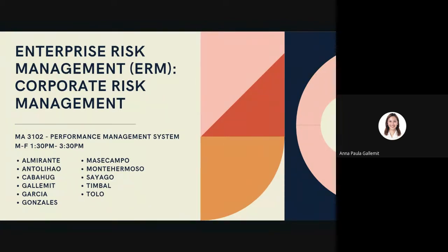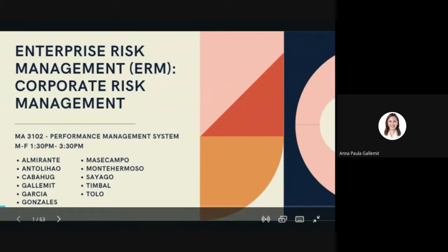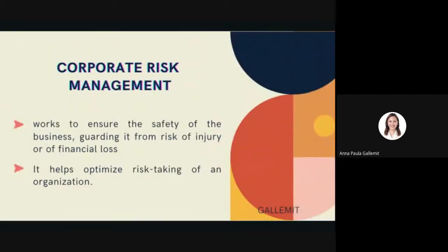Good day everyone. I am Anna Paula Galiemeth and this is Group Four. We will be discussing enterprise risk management, specifically focusing on corporate risk management. Corporate risk management works to ensure the safety of the business, guarding it from the risk of injury or financial loss. It helps optimize risk taking of an organization, serving as a process of planning, organizing, leading, and controlling activities to minimize the effects of risk. This may not guarantee the organization will be unaffected, but it will provide objective and consistent information to decision makers to plan how risk is managed.